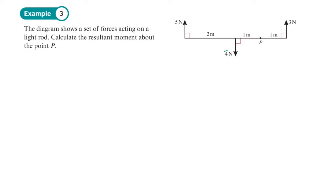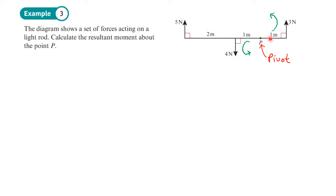It's best to start by identifying the pivot point, which is fixed. Looking at the first force: imagine the ruler is fixed at that end — it's going to want to rotate in an anti-clockwise direction. The second force is also trying to make it rotate anti-clockwise. They're both acting together, both causing rotation in the same direction.